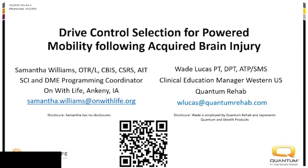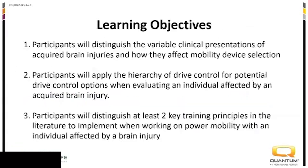Our objectives for the day: you will be able to distinguish the variable clinical presentations of acquired brain injuries and how they affect mobility device selection; apply the hierarchy of drive control for potential drive options when evaluating an individual affected by a brain injury; and distinguish at least two key training principles in the literature to implement when working on power mobility with an individual affected by a brain injury.